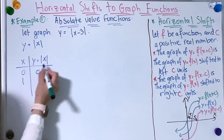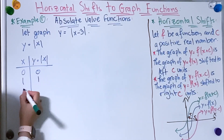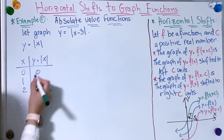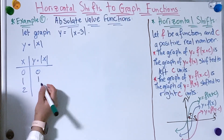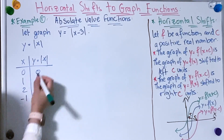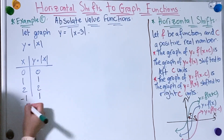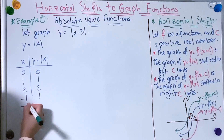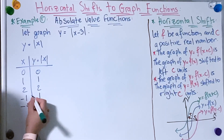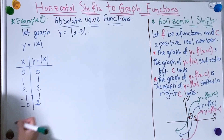And 1: |1| = 1. And 2: |2| = 2. And −1: |−1| = 1. And −2: |−2| = 2.